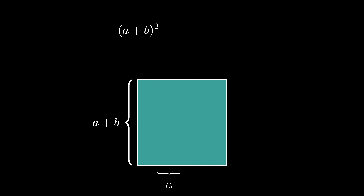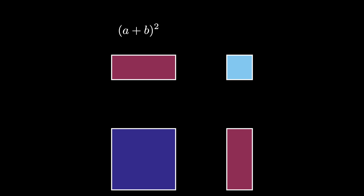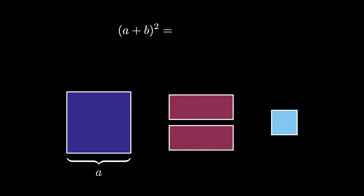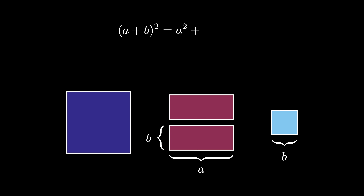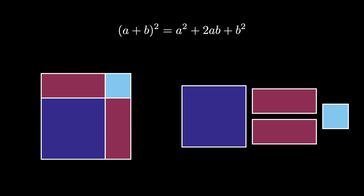One classic way to extend the distributive law is to compute the square of a sum. Here we consider the area of a square with side length A plus B, giving (A+B)² on one hand. On the other hand, decomposing the sides into lengths A and B splits the square into two smaller squares and two congruent rectangles. The first square has area A², the two rectangles together enclose area 2AB, and the second square has area B². So (A+B)² = A² + 2AB + B².